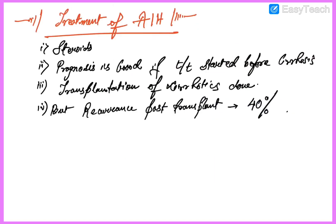For treatment, steroids are used. If treatment is started before cirrhosis, the prognosis will be good. For cirrhotic cases, liver transplantation is done. One demerit of transplantation is the recurrence of AIH post-transplantation — the chance of recurrence after liver transplantation is 40 percent.